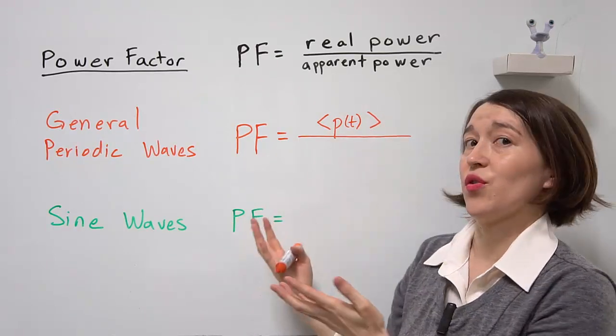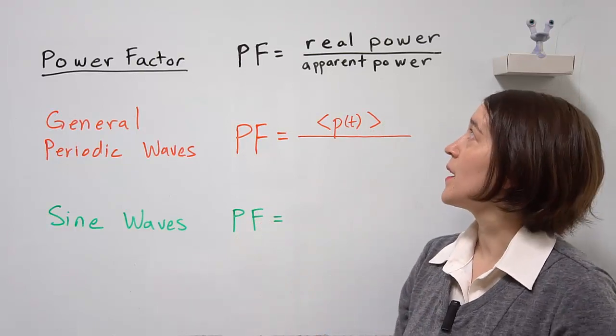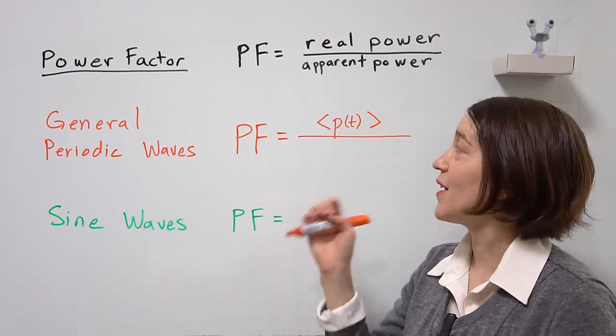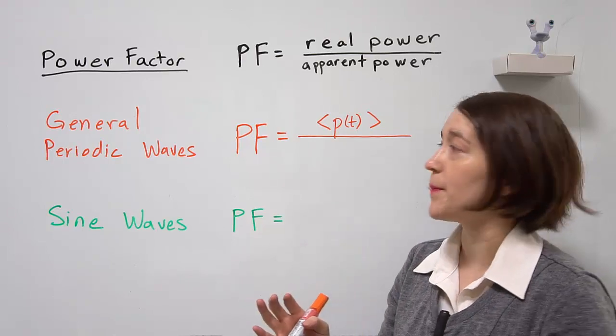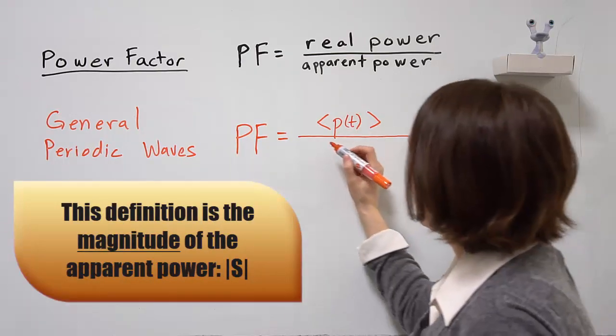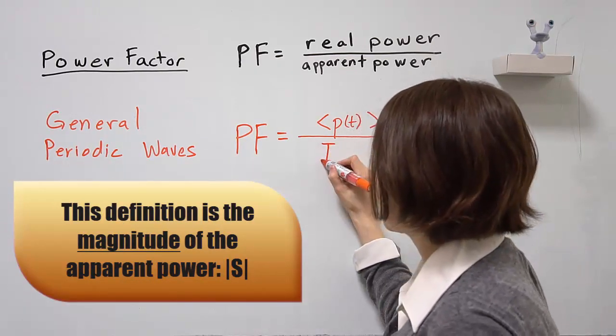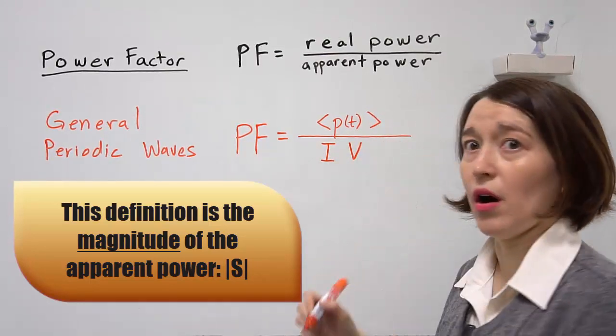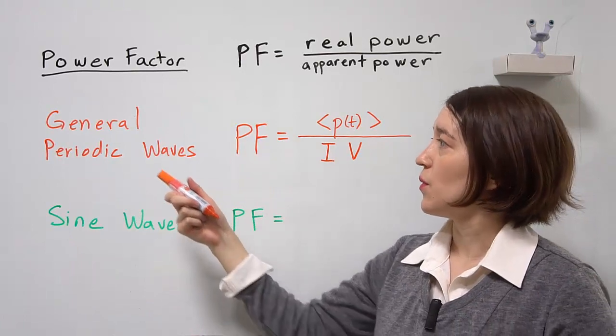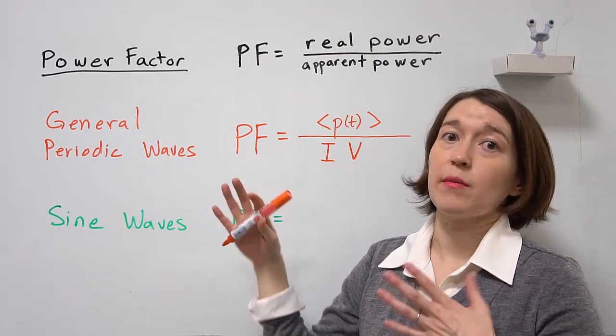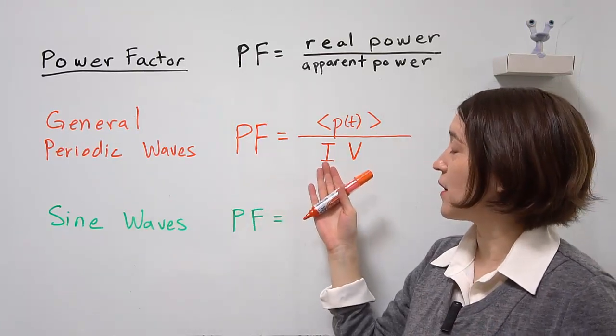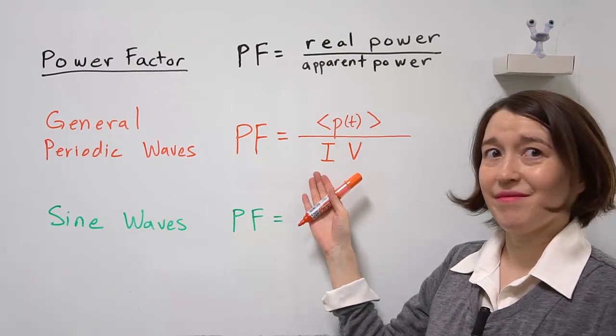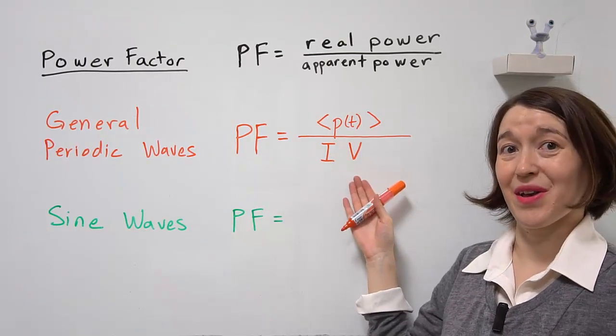The apparent power we haven't really discussed yet, but the definition is actually very simple. It is the RMS value of the current multiplied by the RMS value of the voltage. So whether you have sinusoidal or some other waveform, you can find the RMS value of the current, multiply that by the RMS value of the voltage.